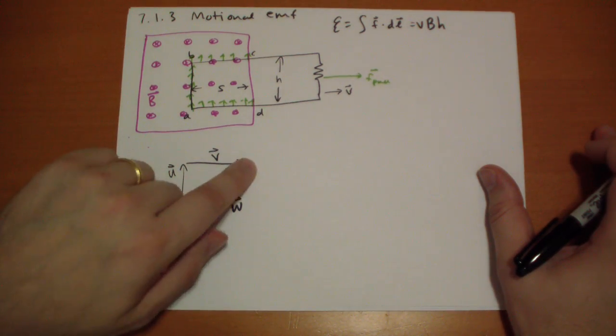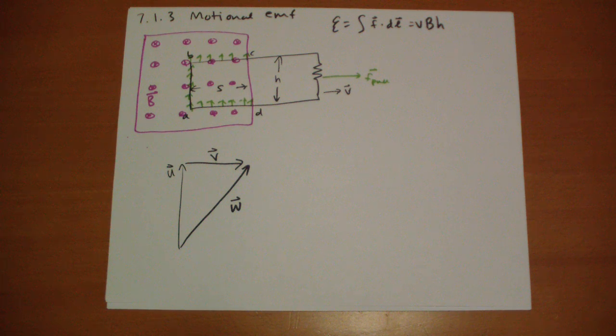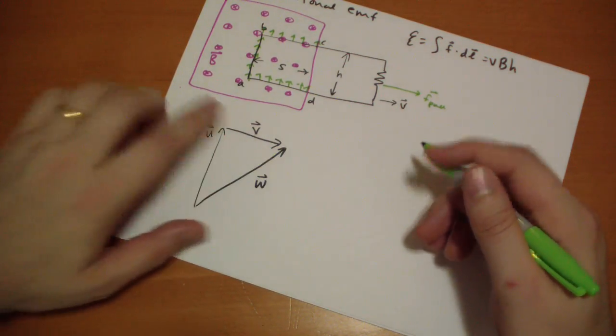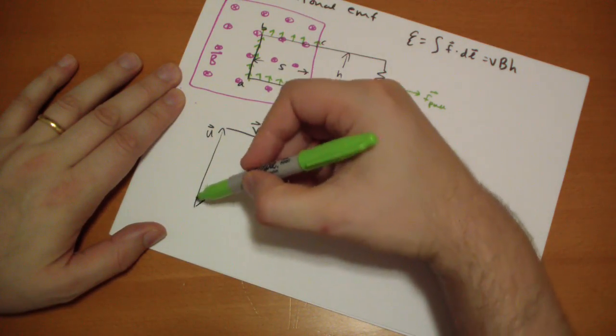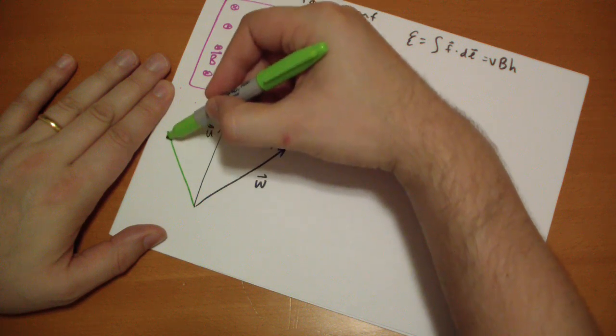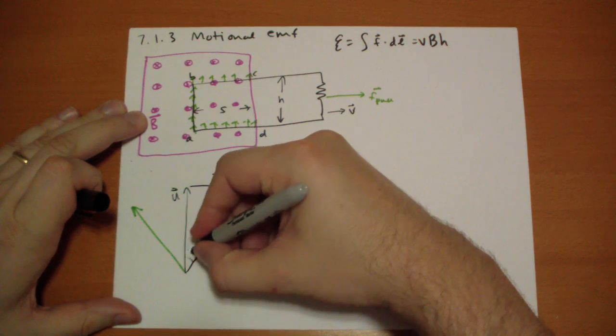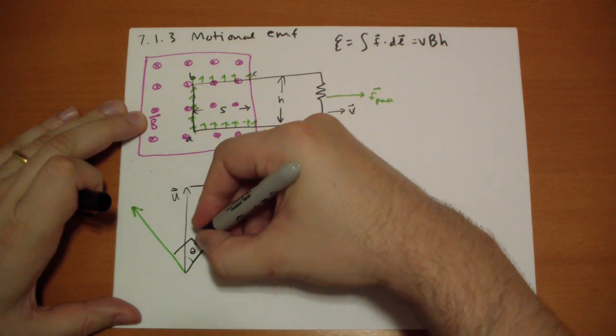Now, the force of the magnetic field is actually going to be perpendicular to this vector w. Not this vector v, but this vector w. And so it's going to actually not point straight up, but point a little bit to the left. So let's label this angle here, theta. These are right angles.